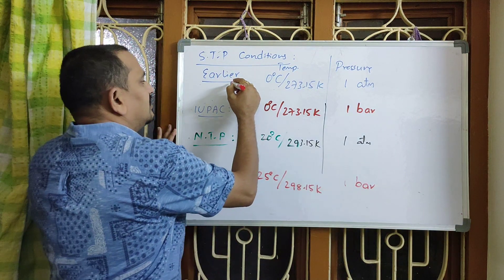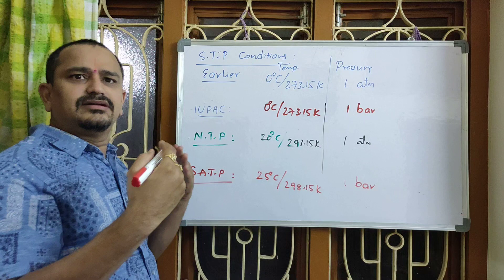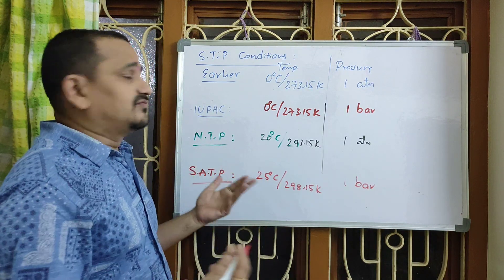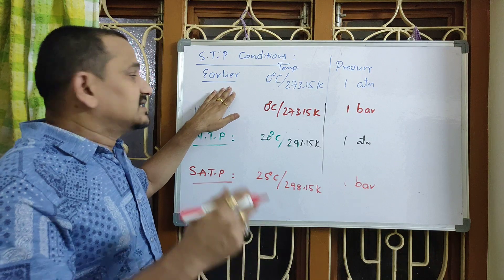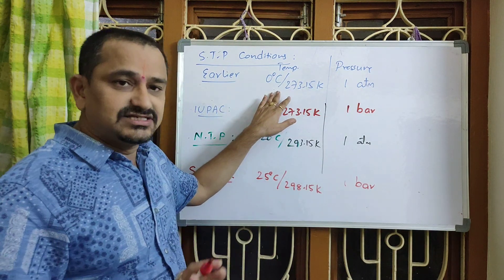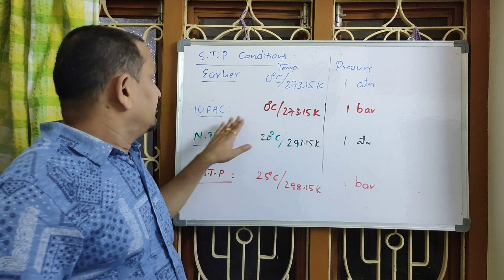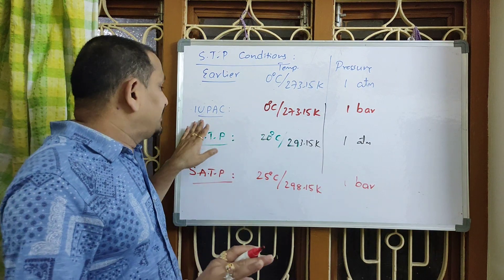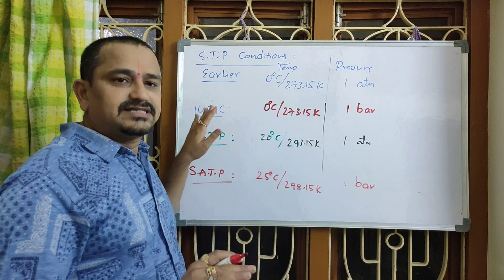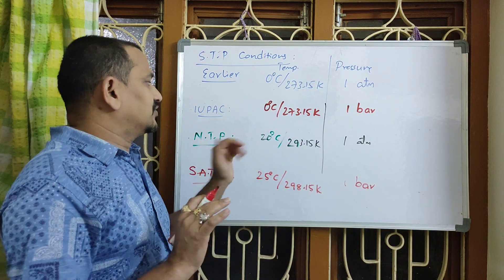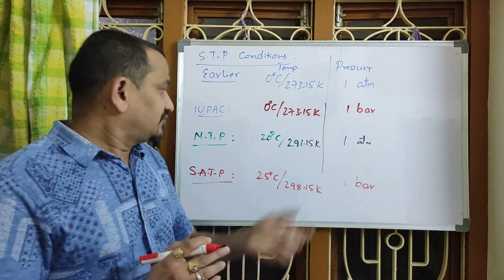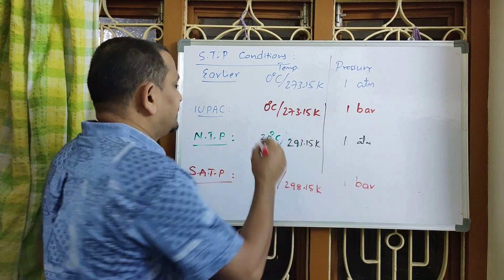Usually, reference books have been printing publications for years, so most books still follow STP as 1 atmosphere and 0 degrees Celsius only. But according to NCERT, which follows the IUPAC scale, these two values — 0°C and 1 bar — must be memorized. That is why they are highlighted.